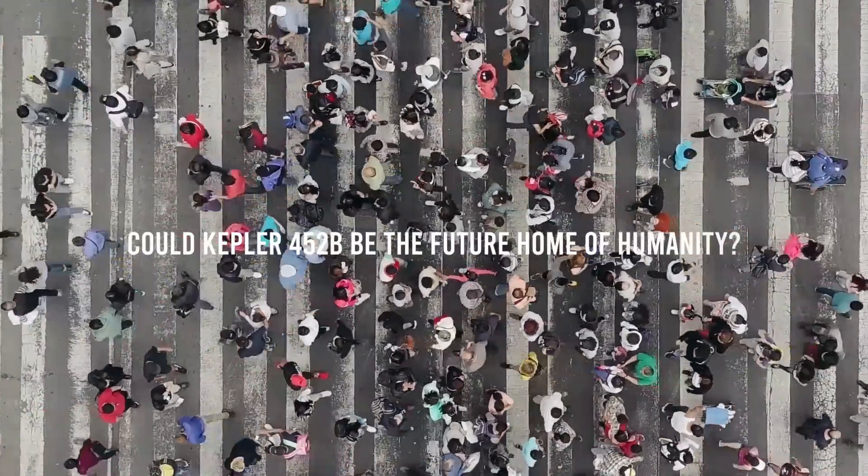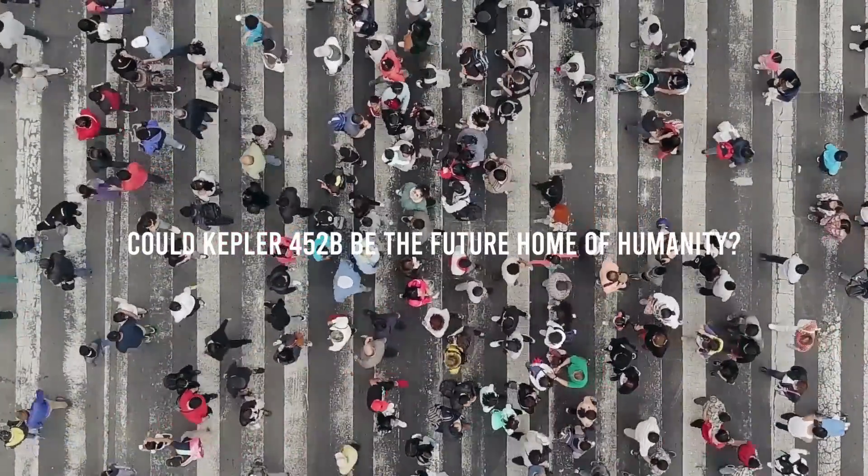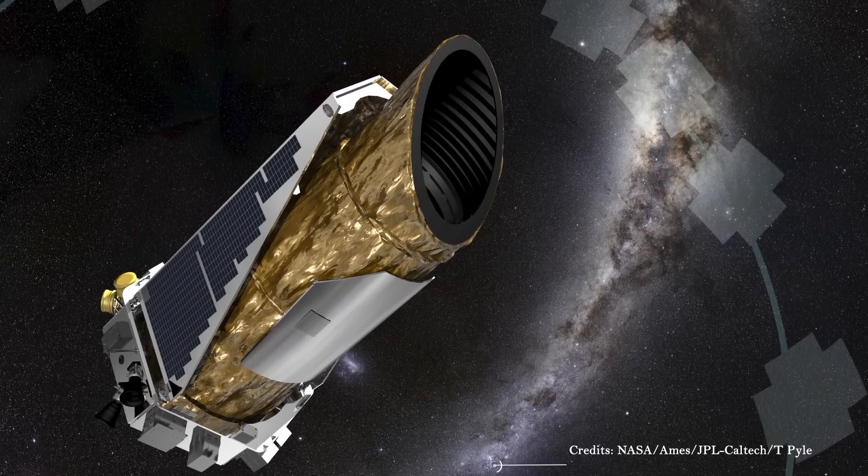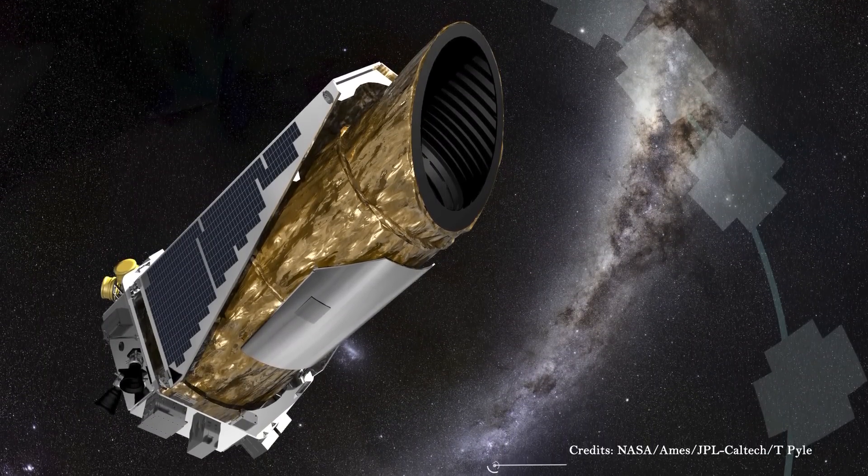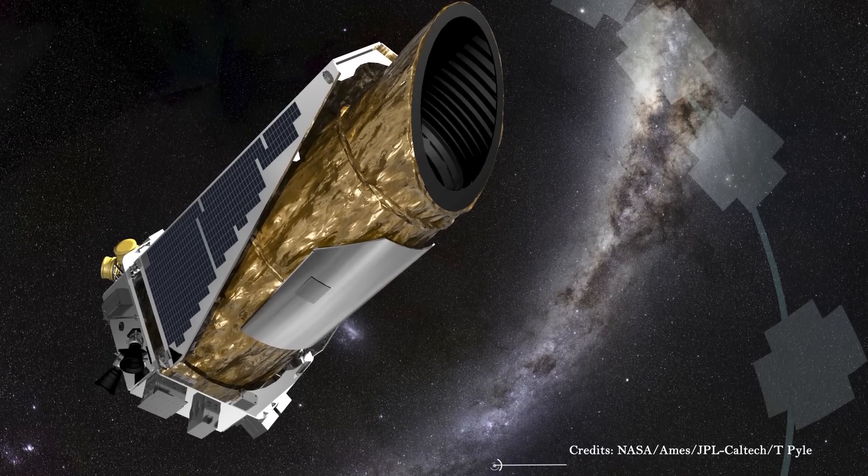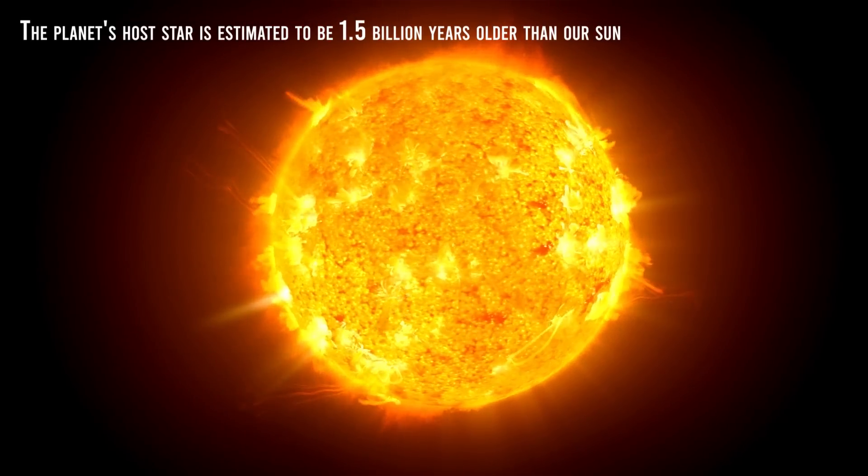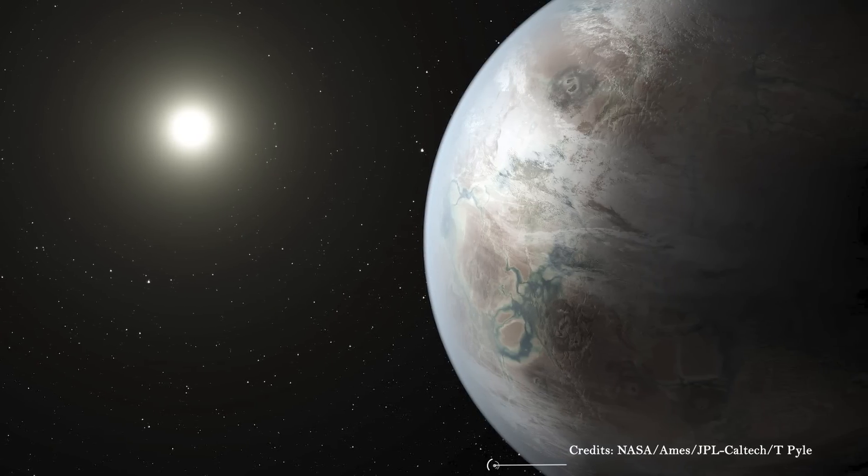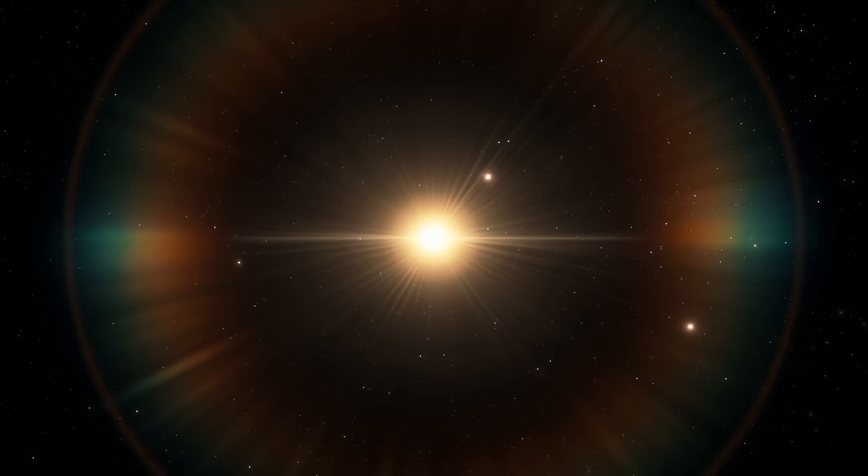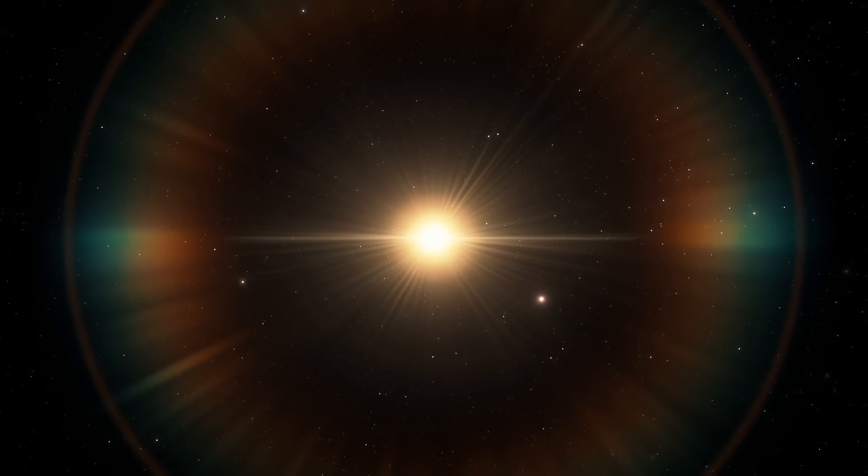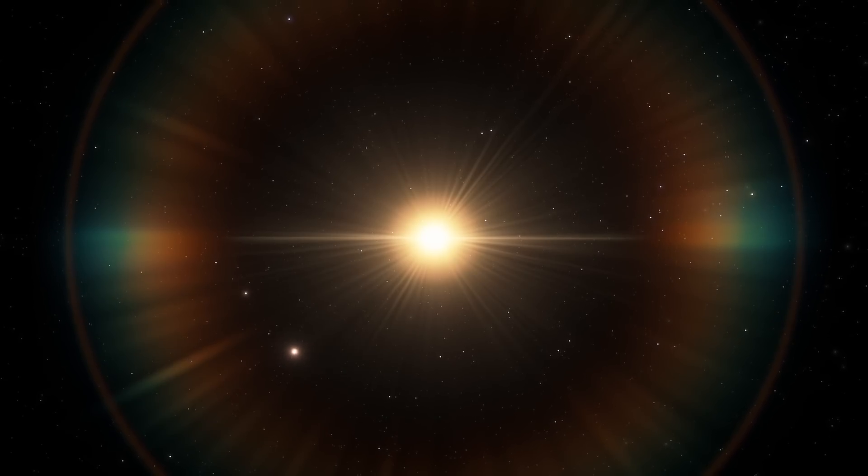Could Kepler 452b be the future home of humanity? Kepler 452b may represent an end in more ways than one, being an outcome of the Kepler mission and any biosphere that the distant world may harbor. The planet's host star is estimated to be 1.5 billion years older than our sun, and the planet itself receives 10% more starlight than our world. Because sun-like stars gradually increase in luminosity as they age, this could mean that Kepler 452b is an old world that slowly fades away, once thrived with life but now withers under the intense light of its star.